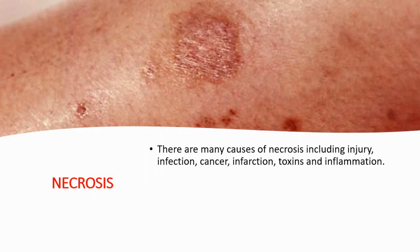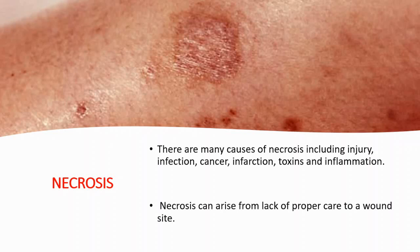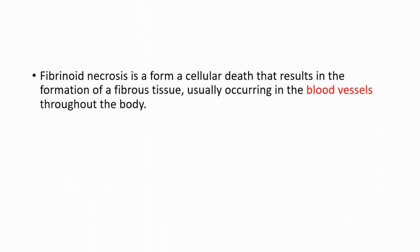Necrosis can also arise from lack of proper care to a wound site — you are seeing an example of necrosis on the top side. Fibrinoid necrosis is a form of cellular death that results in the formation of a fibrous tissue, and it usually occurs in the blood vessels.